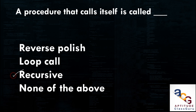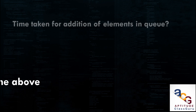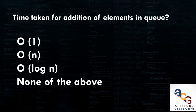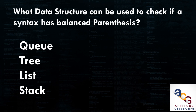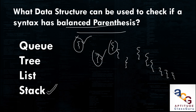A procedure that calls itself is called a recursive function. Which values are assigned to front and rear ends during initialization of a queue? Both front and rear are initialized to -1. The time taken for addition of elements in a queue is O(log n). What data structure can be used to check if a syntax has balanced parentheses? The stack is used for this task.